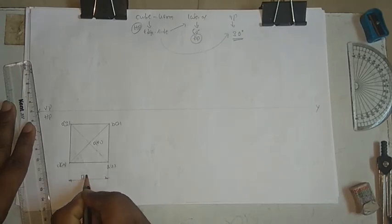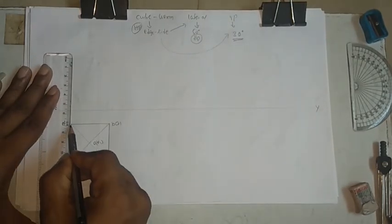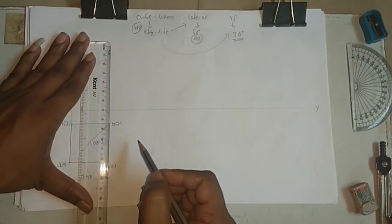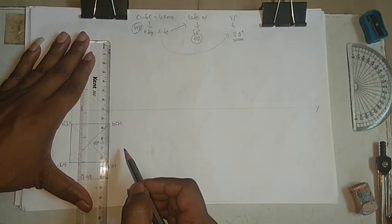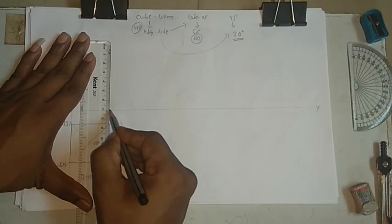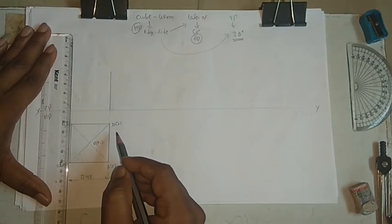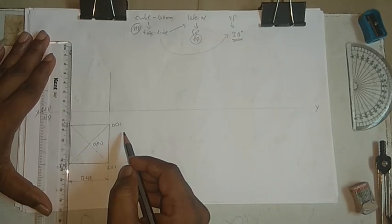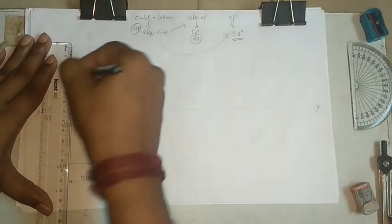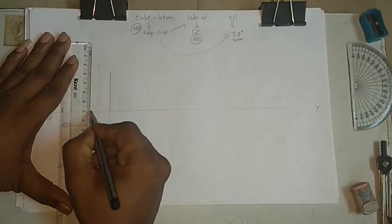Indicate the dimension by writing a small square symbol and writing 40. Then project each point upward to get the front view, which also looks like a square of 40mm side.